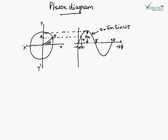Phasor diagram is a representation of sinusoidal voltage and current. Now, how it is represented, we will see.